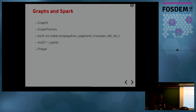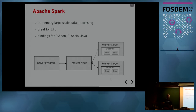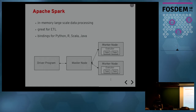In GraphFrames there is a language called motif which is inspired by Cypher but not as powerful. This is the basic architecture of Spark for those not familiar: it's an ETL toolkit or framework that stores everything in-memory if not said otherwise. It has bindings to other languages like Python or R so it's suitable for data scientists. It's written in Scala so there is native support for Scala and Java.